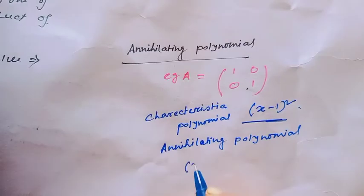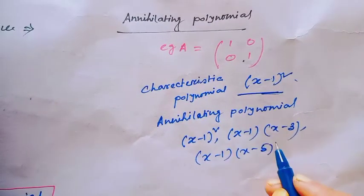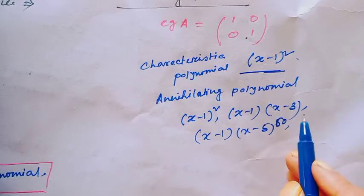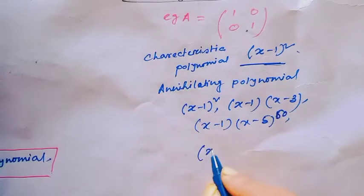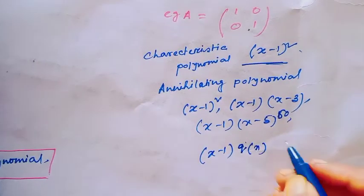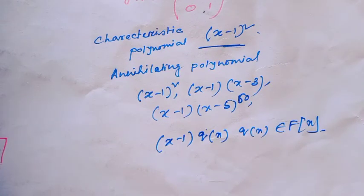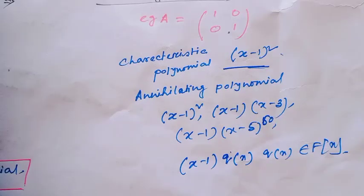Not only the characteristic polynomial, but monic polynomials and minimal polynomials also belong to Ann(T). For example, consider the identity matrix: its characteristic polynomial is (x−1)². This is an annihilating polynomial, but so is (x−1)²(x−5)^50 or (x−1)(x−2) or any polynomial containing (x−1) as a factor. That means the annihilating polynomial of a linear operator is not necessarily unique.